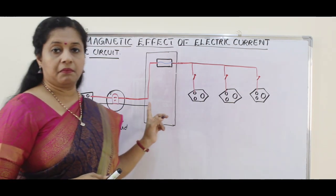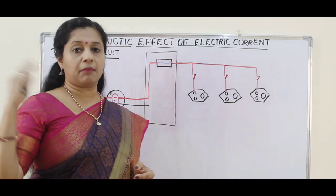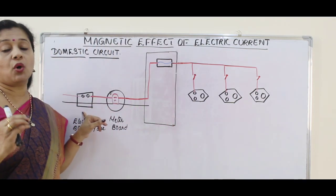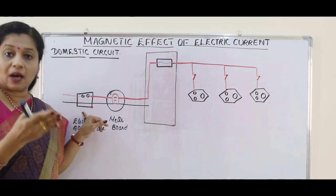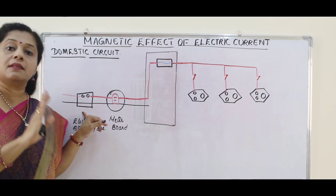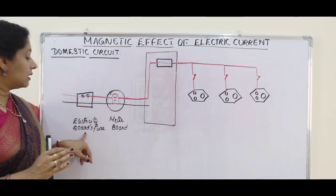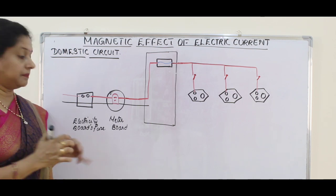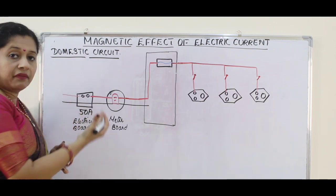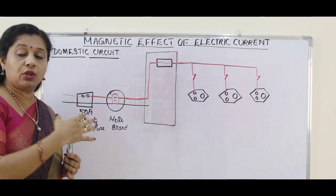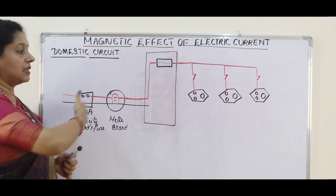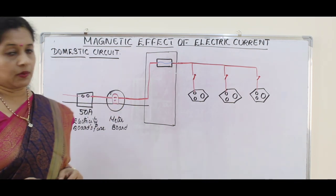This live wire and neutral wire coming from the nearby port first enter into a fuse box, fitted outside our house — we don't have access to it; it is fitted by them. This fuse has a rating of almost 50 amperes. So if a very large current comes into our house from outside, this fuse will cut off and save our appliances inside.